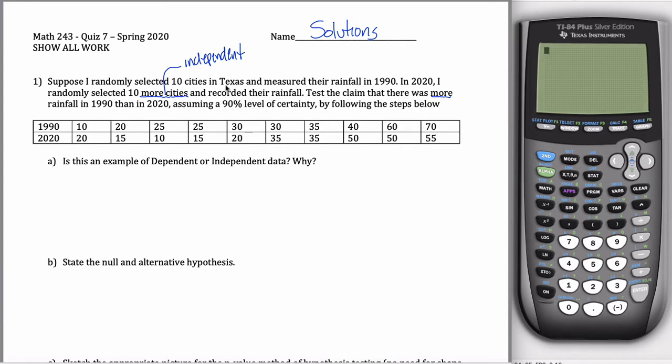So first off, is it dependent or independent data? Well, as I said up here, it's independent. And I mean, the short answer for why is because it was different cities. Because different cities in 2020.